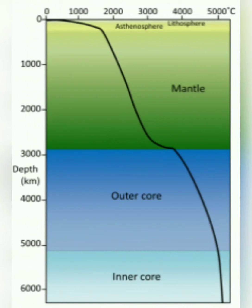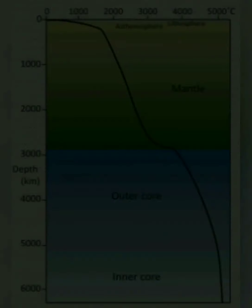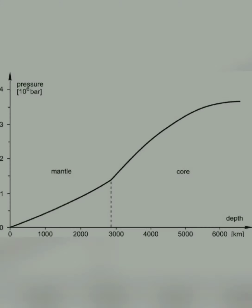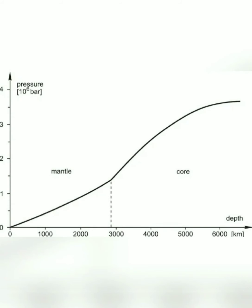As depth increases, temperature increases the same way. When going into the core, the center part of the earth, the temperature will be 4,000 to 6,000 degrees centigrade. However, I want to note that the temperature does not increase at the same rate everywhere — near the upper part of the mantle and near the crust, the rate of temperature increase is less. I will explain why when I explain the parts of the earth.